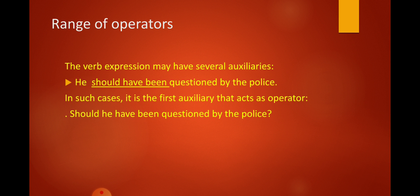Now we have the range of operators. The verb expression may have several auxiliaries. For example: 'He should have been questioned by the police.' In this example we have three auxiliary verbs: 'should', 'have', and 'been.' In such cases, it is the first auxiliary that acts as the operator. So in this example, 'should' is the operator. When I want to make it a question, I move 'should' before the subject. When I want to make it negative, I add 'not' to 'should', not to any other auxiliary verb in the sentence.